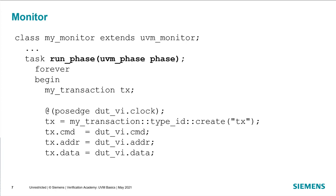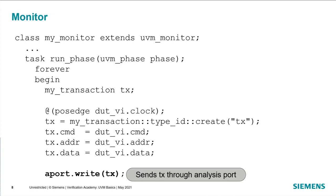In the run phase of the monitor, we need to recognize what's going on on the bus. At the positive edge of the clock, we will create a transaction object to hold the information being communicated across the virtual interface. We capture that information, put it inside the transaction object, and then that transaction object gets communicated to the rest of the system by calling the write method of the analysis port.